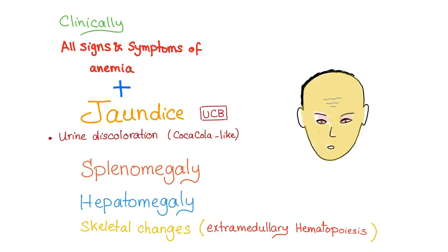Splenomegaly — yes, both intravascular and extravascular can have splenomegaly, especially extravascular. Why will intravascular have splenomegaly? Extramedullary hematopoiesis: when the bone marrow is overwhelmed, it calls on extramedullary organs to produce red blood cells. Hepatomegaly — yes. Skeletal changes — yes, from extramedullary hematopoiesis, similar to thalassemia, though thalassemia is more severe. Hepatomegaly occurs because the liver works hard to conjugate the excess unconjugated bilirubin.